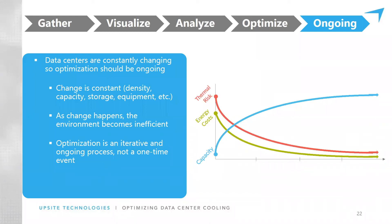What's really important is the right side of this graph — maintaining those benefits in perpetuity, making sure the data center doesn't drift out of efficiency. Making sure that as significant adds, moves, or changes occur, everything is being adjusted to ensure the least amount of energy is being consumed to keep the IT equipment happy. As Tracy mentioned, in a typical data center 35% of the energy being consumed goes to cooling — that's 35% of the total load going into the facility.